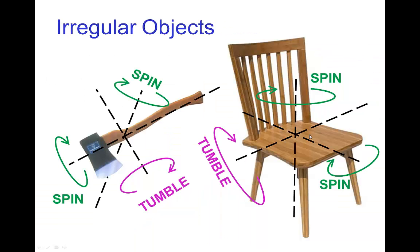So, all objects, including irregular objects, have these three axes.